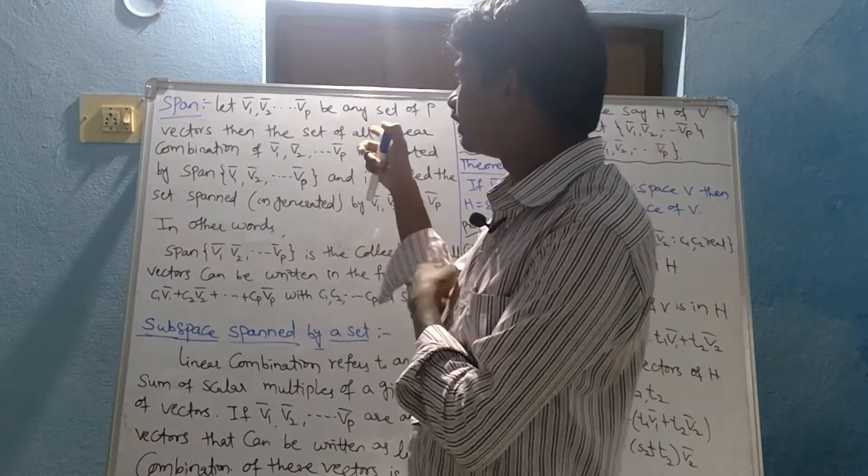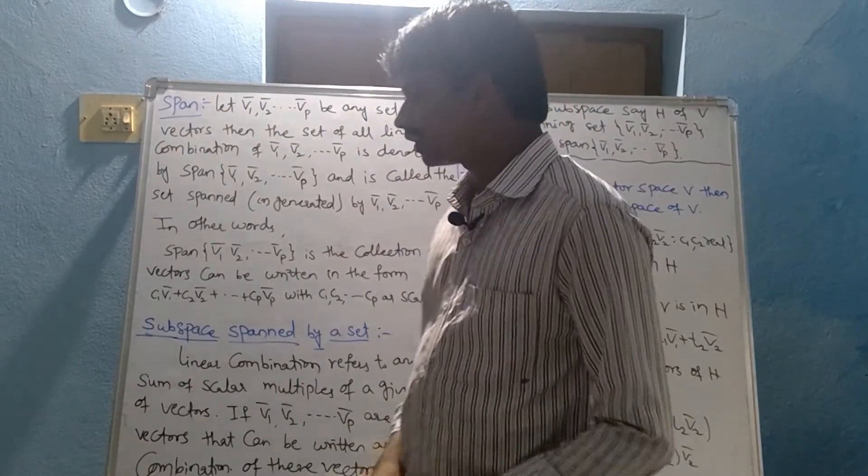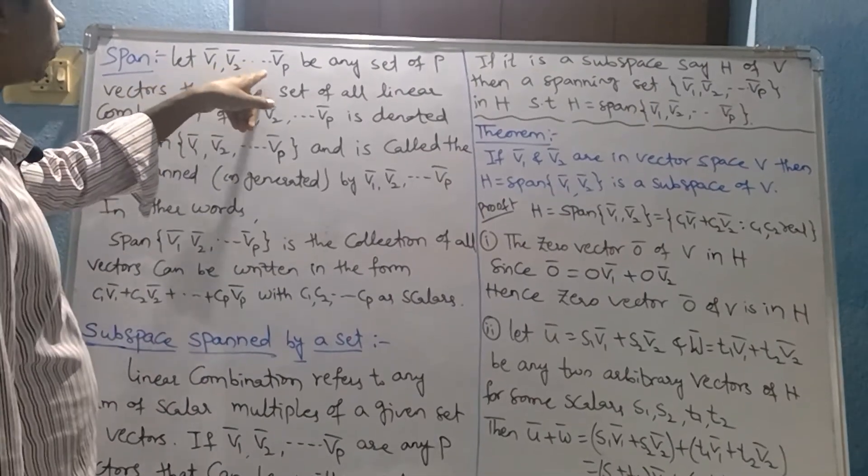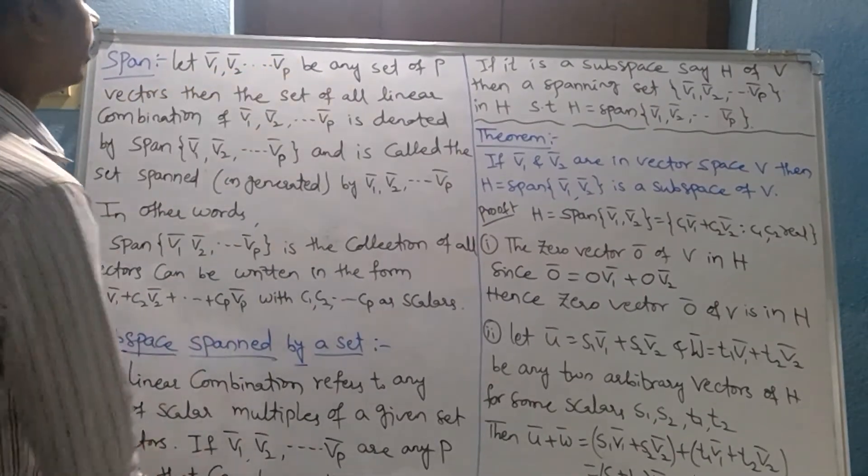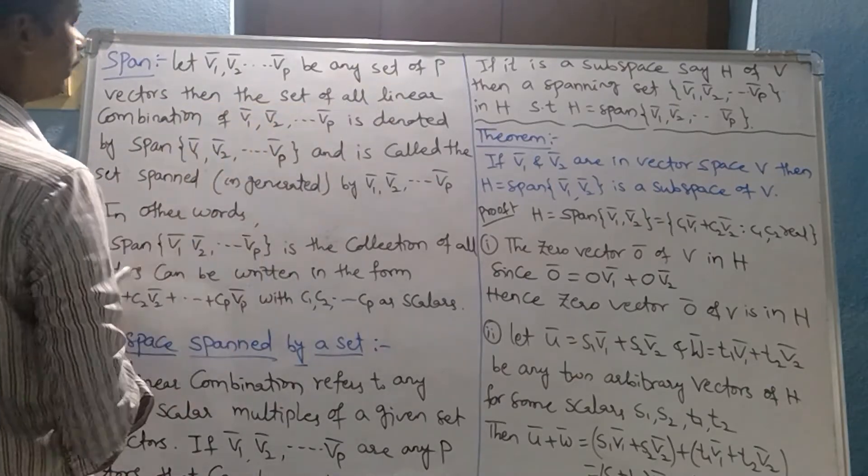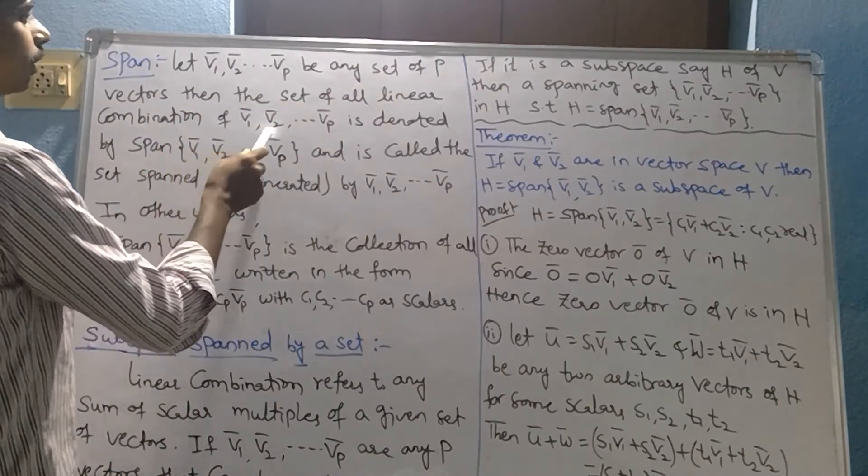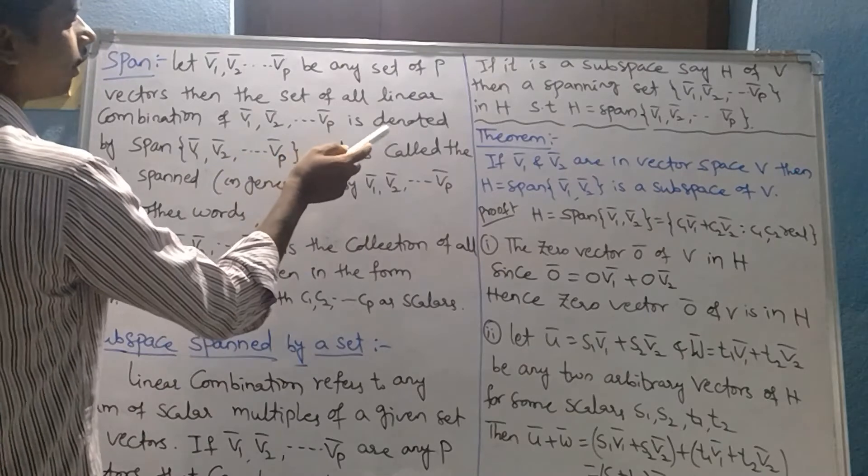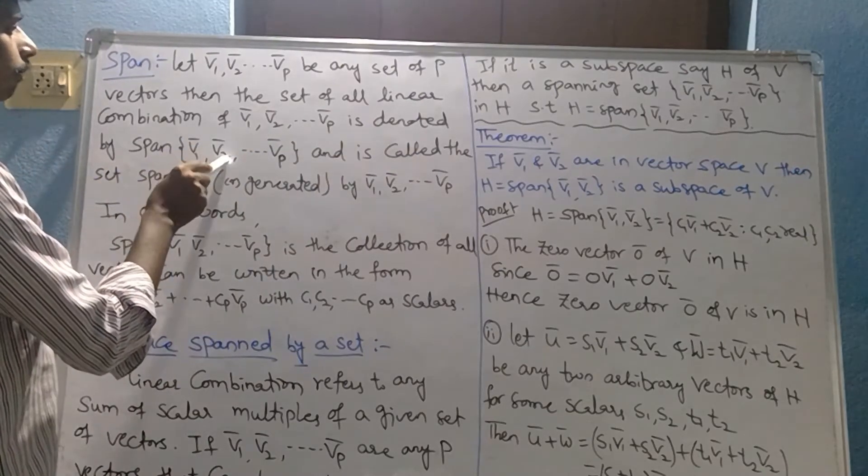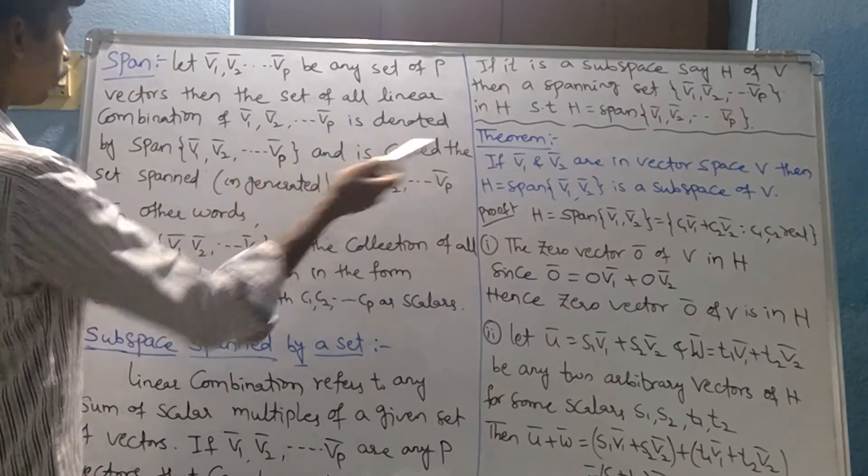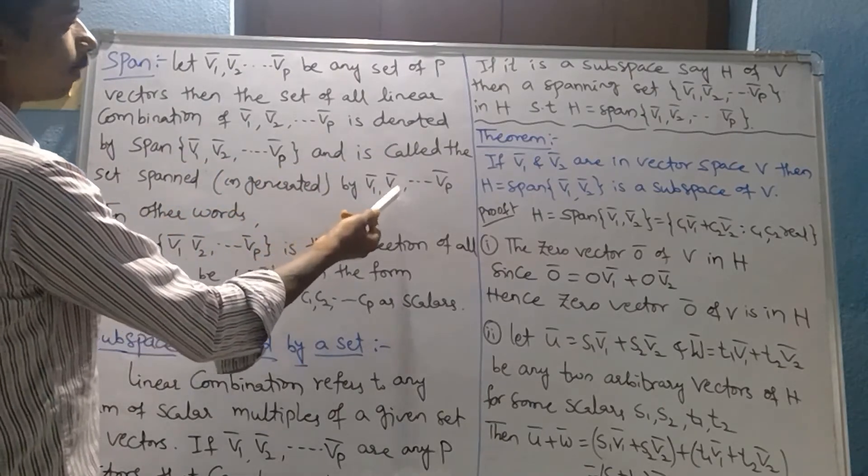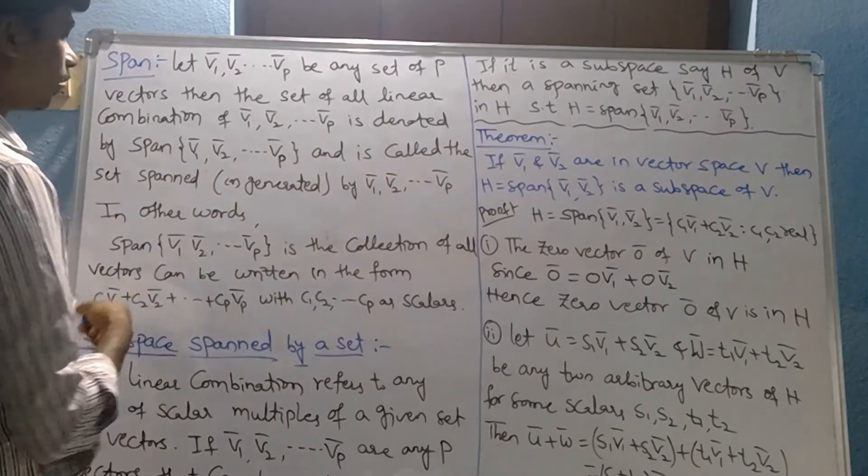I am going to tell you the span definition first. Let V1 bar, V2 bar, so on Vp bar be any set of P vectors. Then the set of all linear combinations of V1 bar, V2 bar, so on Vp bar is denoted by span of V1 bar, V2 bar, so on Vp bar, and is called the set spanned or generated by V1 bar, V2 bar, so on Vp bar.